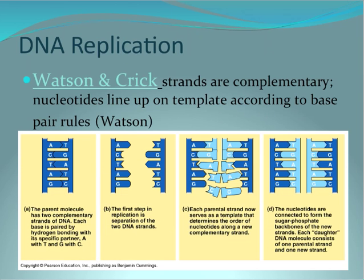Watson and Crick found the strands were obviously complementary in their base pairing, and it was because of this that they showed DNA had the capacity for self-replication. The first step starts with a parent molecule that has two complementary strands of DNA, where each base is paired by hydrogen bonding with its specific partner — A with T, C with G.